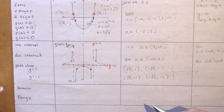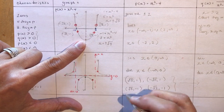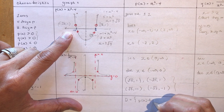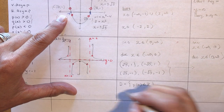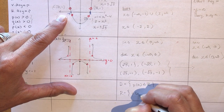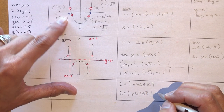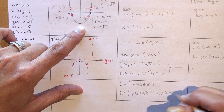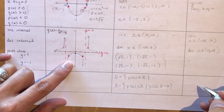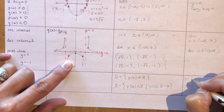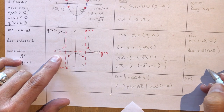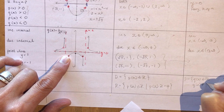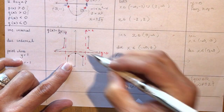For domain and range: the domain of p(x) is all real numbers. The range of p(x) is p(x) ≥ −4, since the parabola has a minimum at −4. For the reciprocal function q(x), the domain is all real numbers except x equals plus or minus 2, since those are the vertical asymptotes.